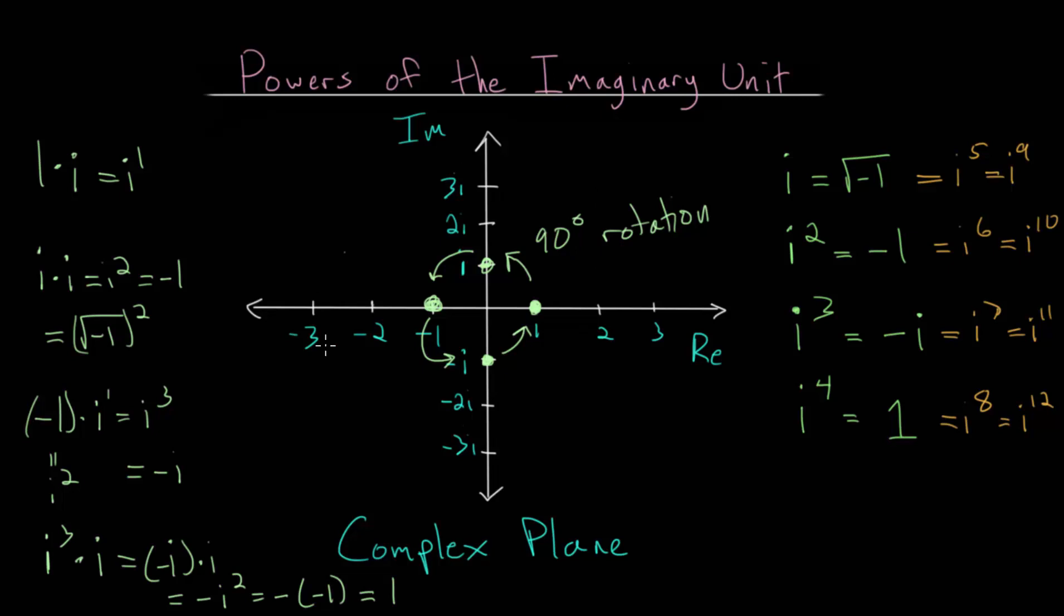So it looks like geometrically, every time we multiply by i, we just rotate 90 degrees. And if we do it four times, we just end back where we started. So that's one way to see visually why this goes in cycles of 4.